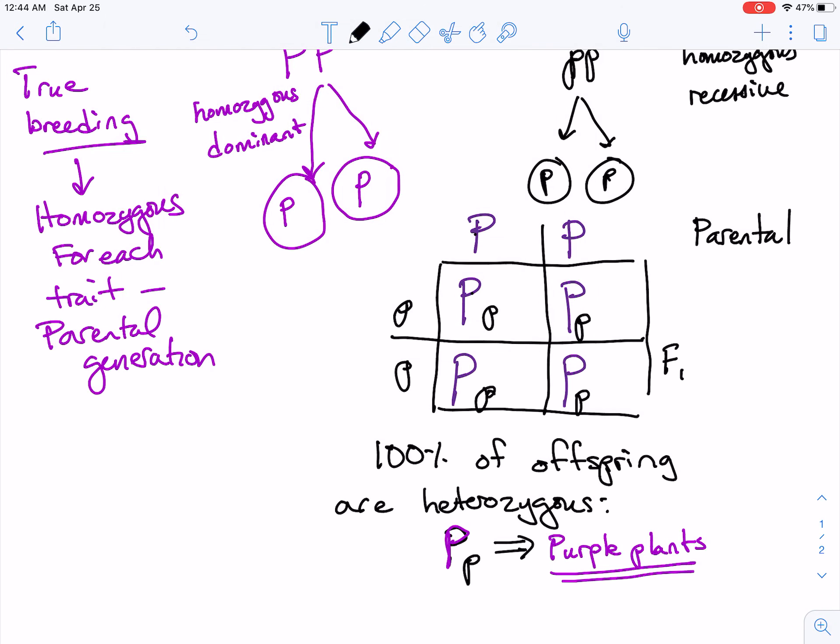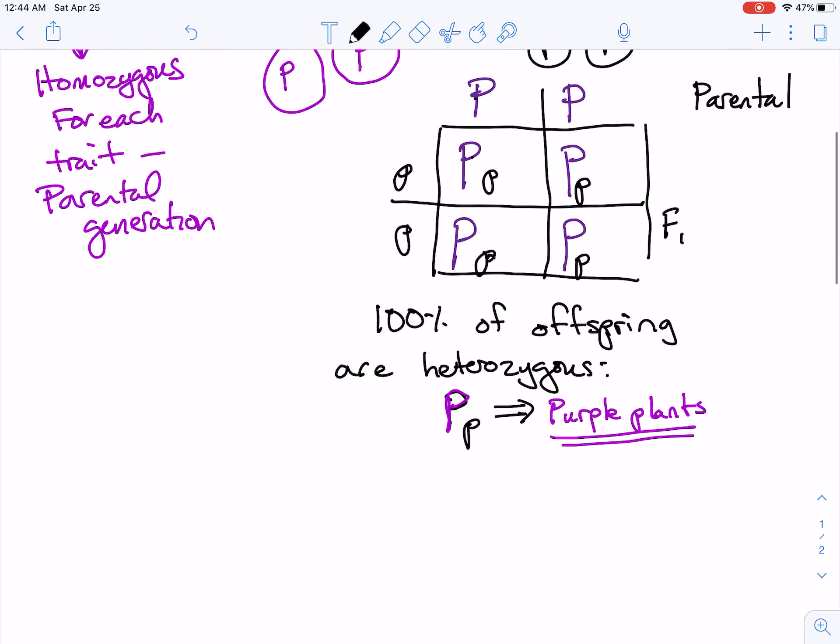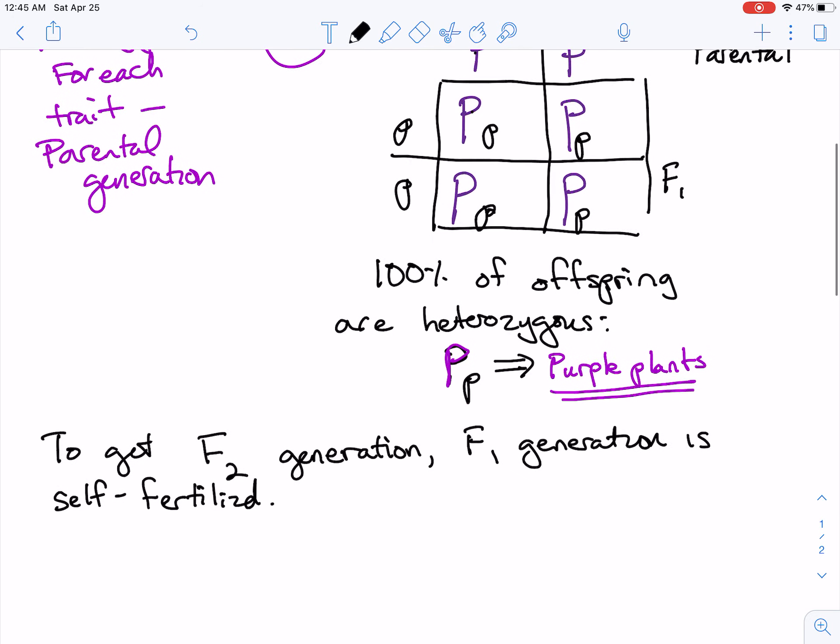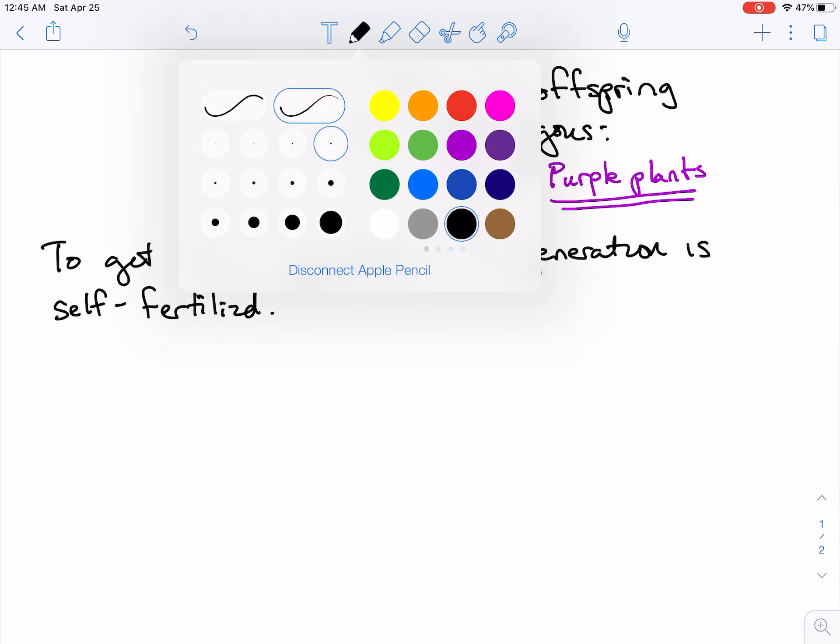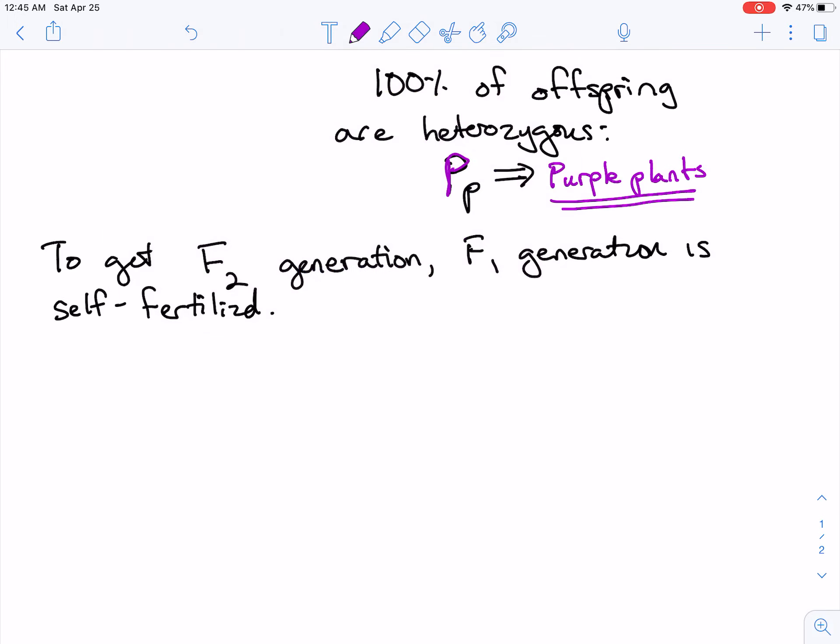So what we can do to get F2, so to get F2 generation, or the second generation of offspring, F1 generation is self-fertilized. So with F2, we self-fertilize F1. So again, we have two types of gametes here.